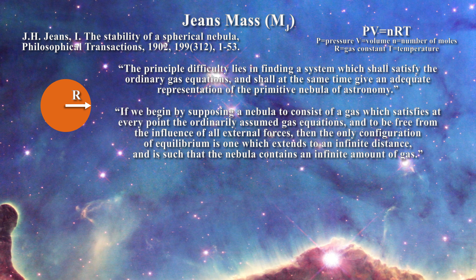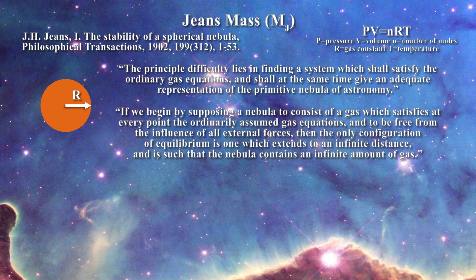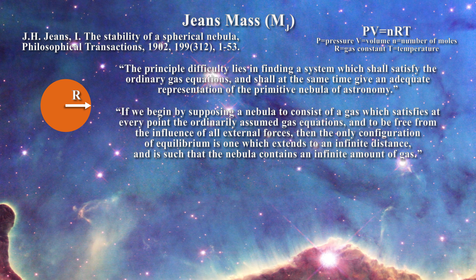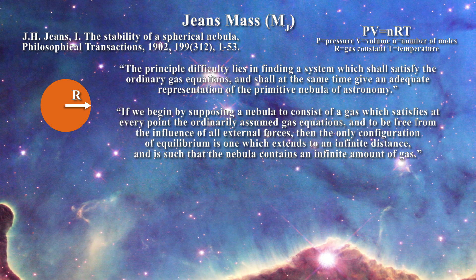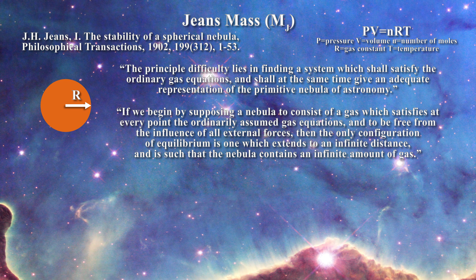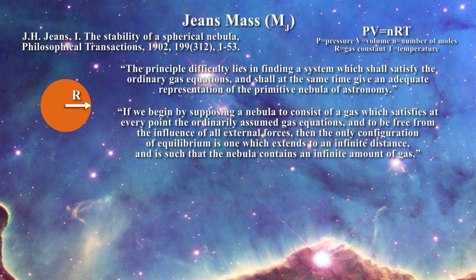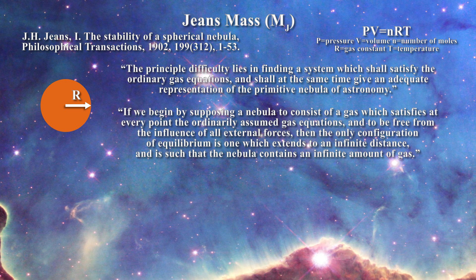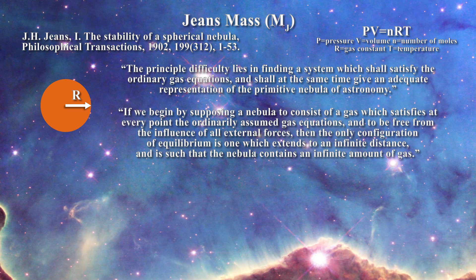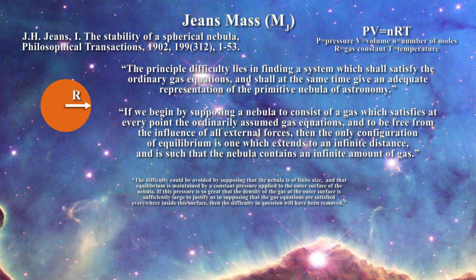Jeans recognizes the need of an infinite system for which there is no solution. Jeans tries to resolve the problem but at the same time recognizes that the density in the outermost part of the nebula would not be great enough to allow the application of statistical methods and that the gaseous equations would thus break down.